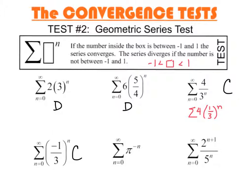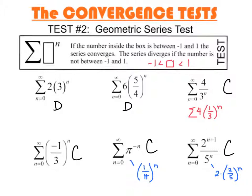If you recall, this we rewrote as 1 over pi to the nth power. Well, 1 over pi is 1 over 3.14159 — that's definitely less than 1. So this converges. And this one, we rewrote as 2 multiplied by 2 fifths to the n, with a common ratio of 2 fifths. So this converges as well.